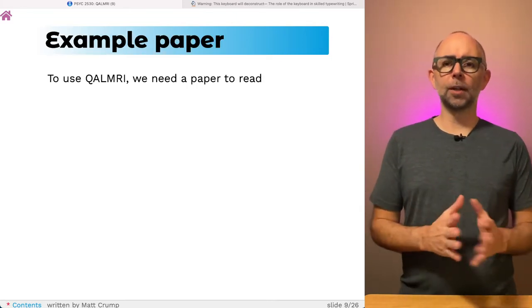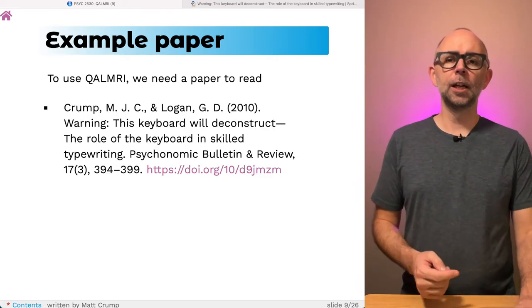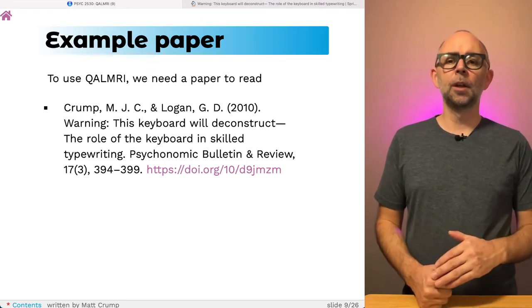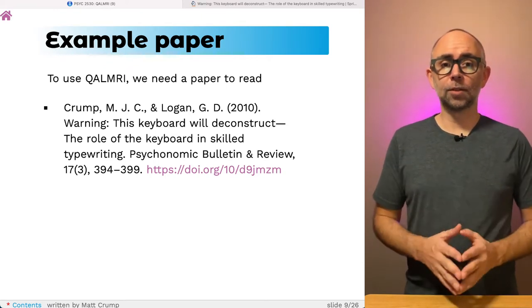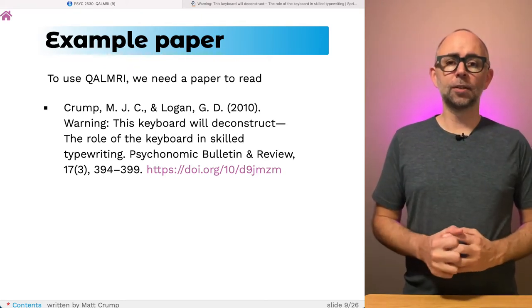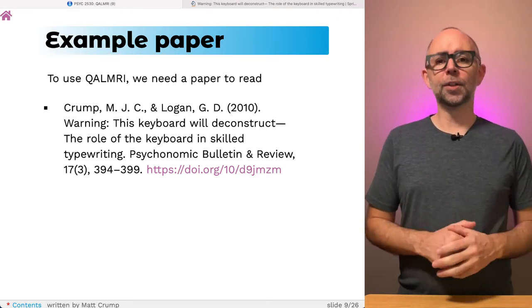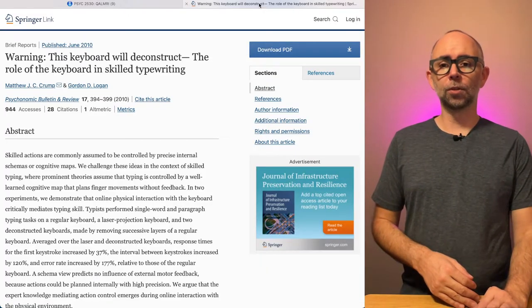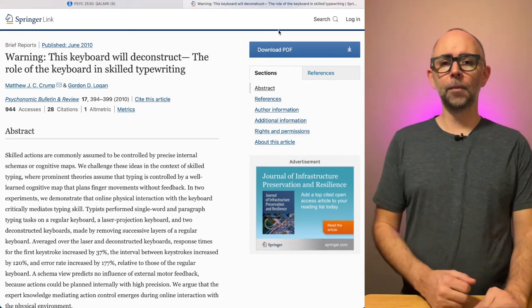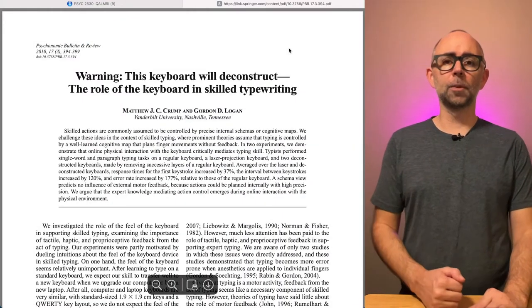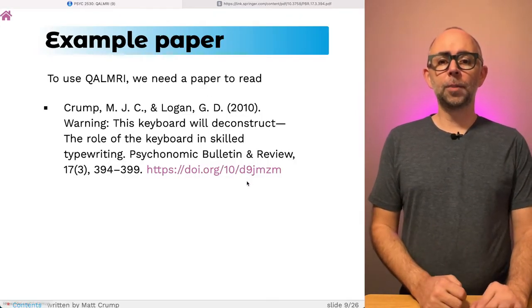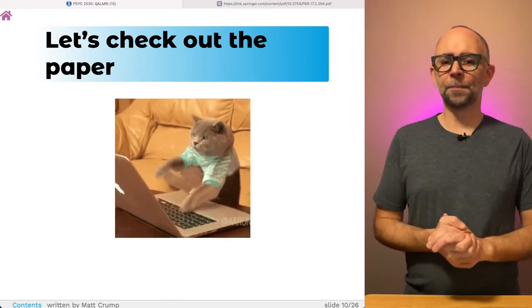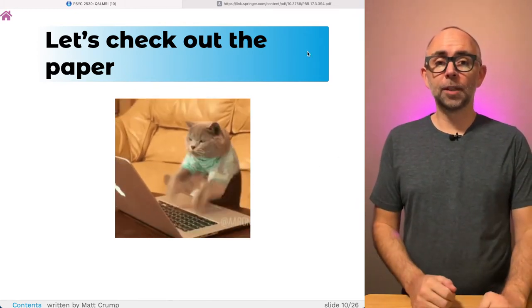To use the QALMRI method, we need an example paper. I've chosen one for us to read. It happens to be a paper that I published, so I'm already familiar with it. It was published in 2010. The title is Warning, This Keyboard Will Deconstruct. The Role of the Keyboard in Skilled Typewriting. It was published in a journal called the Psychonomic Bulletin in Review. You can click this link, and that will take you to the journal homepage where you can access the manuscript. You can download the PDF. So, here's the paper. We'll scan through this in a moment, and if you've been following along, you'll know that this paper is about typing on keyboards.